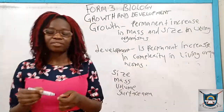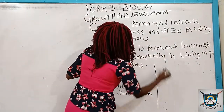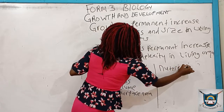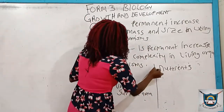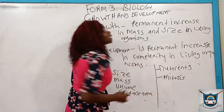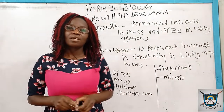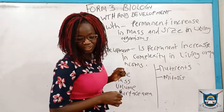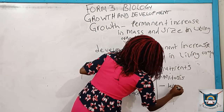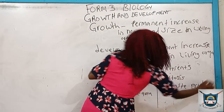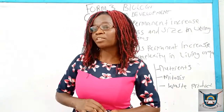For growth to occur, there are also various factors that must be present. These factors include the presence of nutrients to be used by the growing organism. Then cell division called mitosis must also occur, which involves the multiplication of cells leading to increase in size and mass. Also, there must be a way of eliminating waste products, and oxygen must be available in the organism for growth to occur.